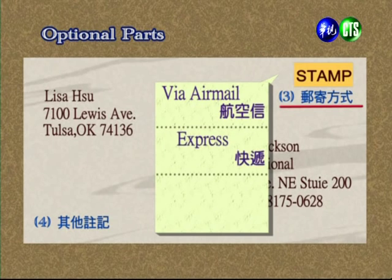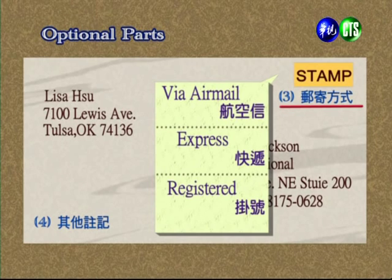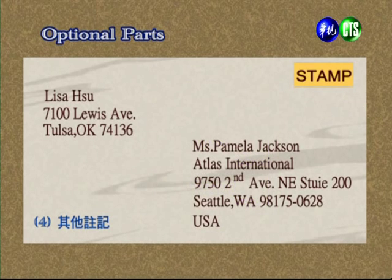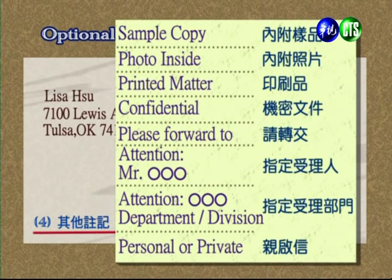The ZIP code must always be included. Next, let's look at mailing methods. There are several types: for example, via airmail for air delivery after stamping, or express for courier. You can also mark it as registered if the letter is sent by registered mail. If the envelope contains additional items, you can note: sample copy (enclosing a sample), photo inside (enclosing photos), or printed matter (enclosing printed materials).